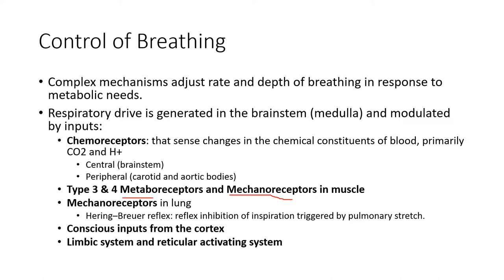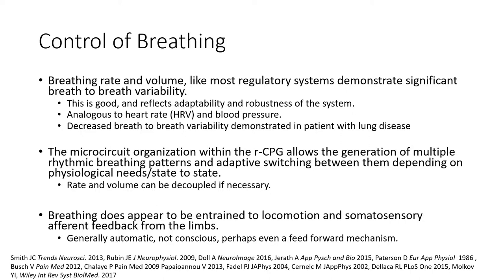All of these inputs come into the brainstem, which is where the respiratory central pattern generator is. Central pattern generators are microcircuits within the brain that allow for stereotyped and repetitive movements that we need to do subconsciously. Walking is one — we don't think about walking. It's a motor program that takes inputs from the periphery to adjust according to the state we're being exposed to. Breathing is the same exact way — we can adjust the rate and volume according to demands.